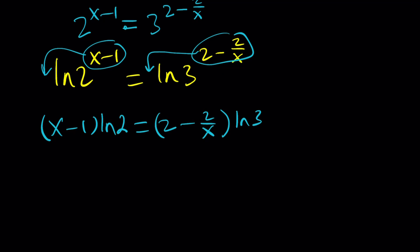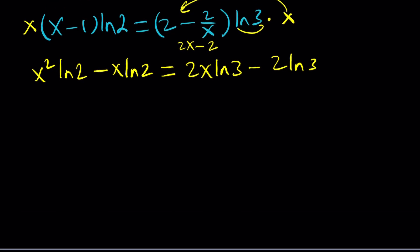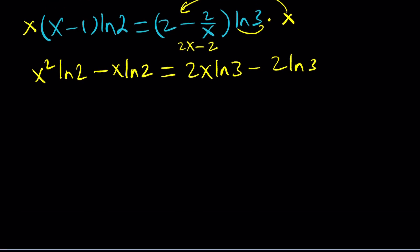Now here's what we would like to do: get rid of all the fractions. So let's multiply both sides by x. We're going to distribute the x here, so that's going to be x squared ln 2 minus x ln 2. When I distribute that, I'm going to be getting 2x minus 2, and then that will be multiplied by ln 3. So it's going to be 2x ln 3 minus 2 ln 3. Now, here's what we would like to do: put everything on the same side and write this as a quadratic equation.